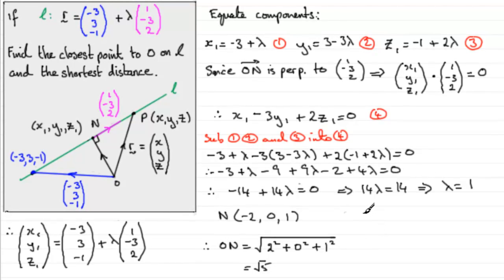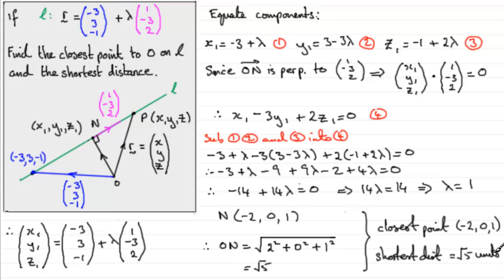So in summary, what we have got then is they asked us to find the closest point to O, so we can just say that the closest point happens to be (-2, 0, 1). And the shortest distance is equal to root 5, root 5 units if you like. I don't think you'd be marked down if you didn't write units, but it is a length.